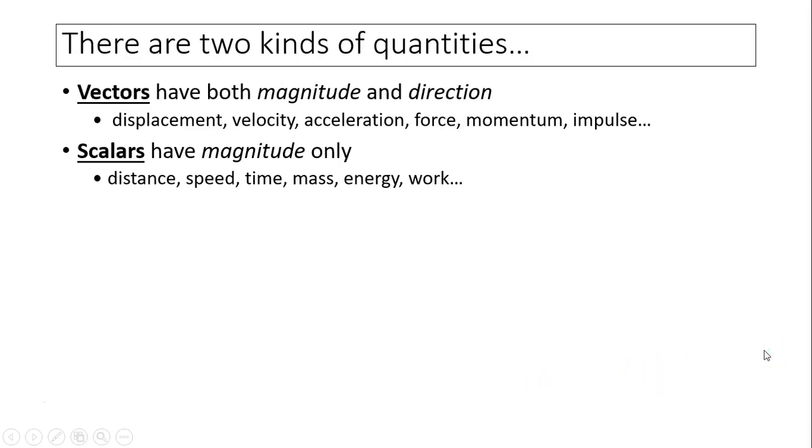There are two kinds of quantities in physics. One is vector, the other one is scalar. The difference is vector has direction, the scalar has no direction.